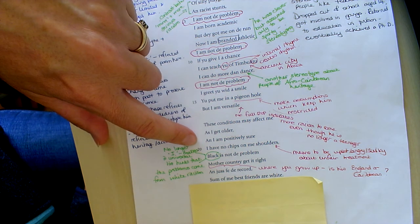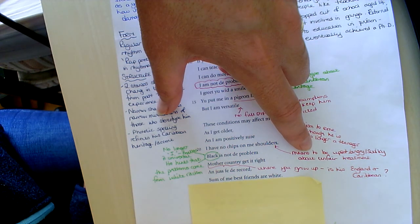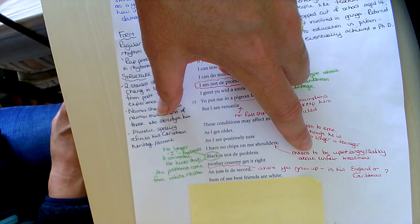And I am positively sure I have no chips on me shoulders. To have a chip on your shoulder means you're upset about unfair treatment and often it's associated with being sulky.